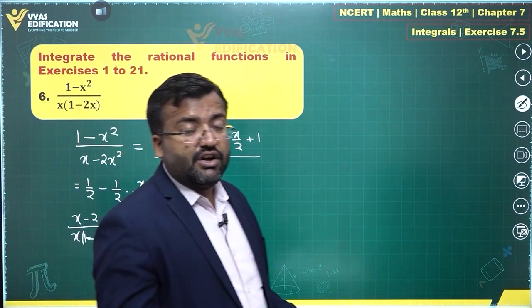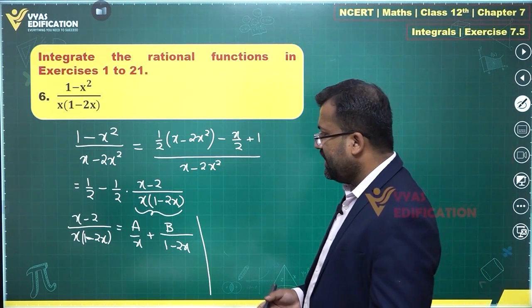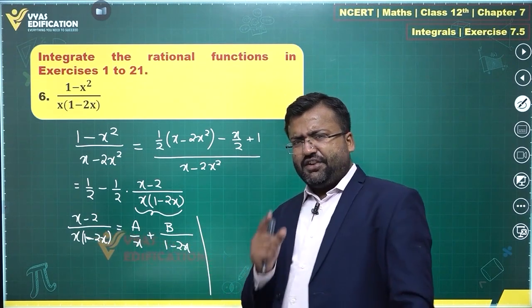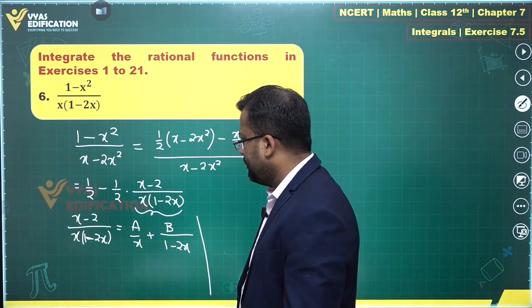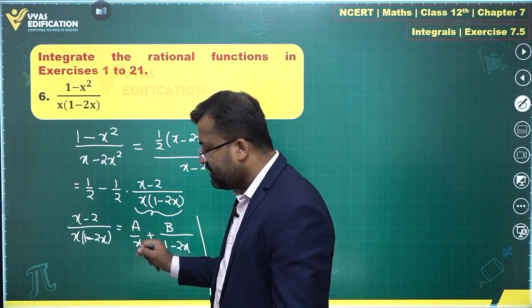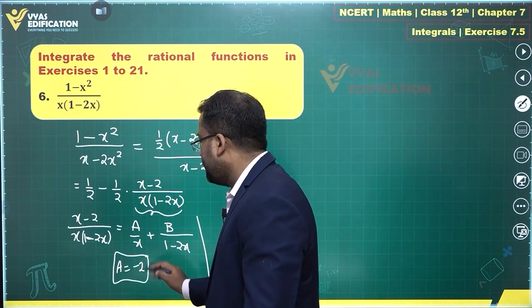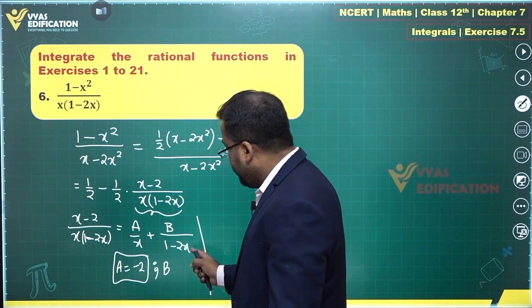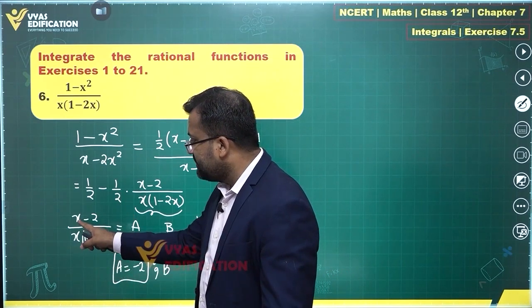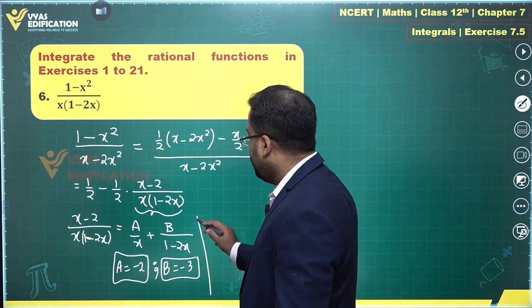Finding the values of A and B is important. Using the shortcut approach: for A, multiply both sides by x and substitute x equal to 0 (where the denominator factor x becomes zero). This gives minus 2 upon 1, so A equals minus 2. For B, the factor 1 minus 2x becomes 0 at x equal to 1/2. Substituting x equal to 1/2 gives (1/2 minus 2) upon (1/2), which is (minus 3/2) upon (1/2), so B equals minus 3.